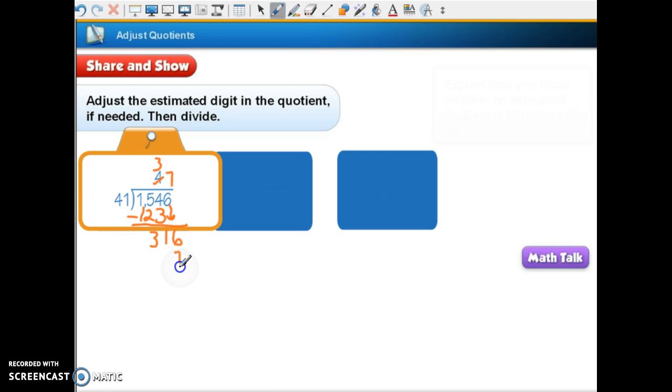Okay, so now we're going to go down 1 and we're going to try 7. 7 times 1 is 7, and 7 times 4 is 28. I'll do a little regrouping. 16 minus 7 is 9, 10 minus 8 is 2. 29 is less than 41, so our answer is 37 remainder 29.